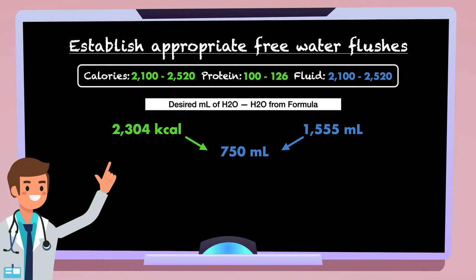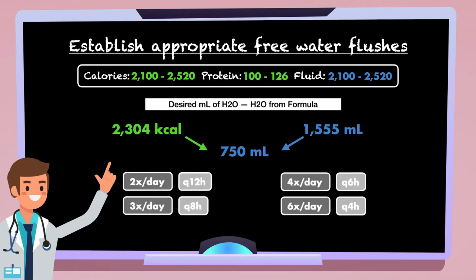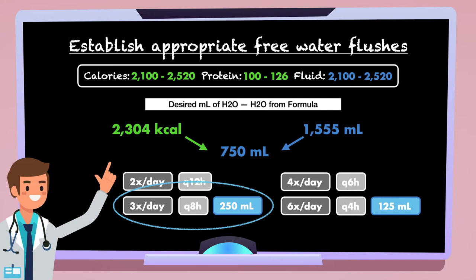Free water flushes can be administered 2 times per day, every 12 hours or Q12H, 3 times per day, every 8 hours or Q8H, 4 times per day, every 6 hours or Q6H, or 6 times per day, every 4 hours or Q4H. For Mr. Jones, I would feel comfortable with any of these frequencies, although with the 750 milliliters, giving it 3 times per day and 6 times per day leaves us with nice round numbers to work with, at 250 milliliters and 125 milliliters respectively. I'm going to go with 250 milliliters Q8H.